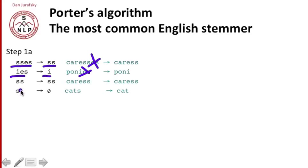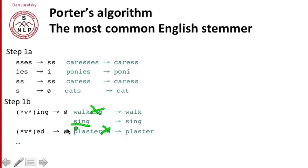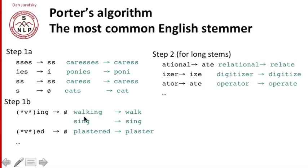The rules operate in order, so at this point any remaining 'SS' stays as 'S,' but any other 'S' gets deleted. So the 'S' of 'cats' is deleted while the 'SS' of 'caress' is kept. Similarly in step 1B, we remove all of the 'ing's and 'ed's — so we cross off the 'ing' of 'walking' and the 'ed' of 'plastered.' But the rule specifies carefully that in the Porter stemmer, only words with a preceding vowel get their 'ing' removed. A word like 'sing,' which has no extra vowel before the 'ing,' stays as 'sing.' But 'walking,' which has a vowel before the 'ing,' is allowed to delete the suffix.